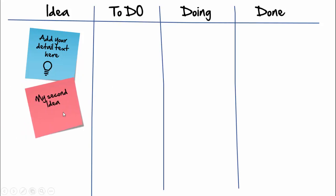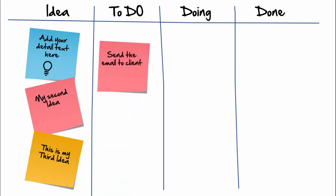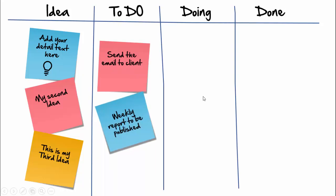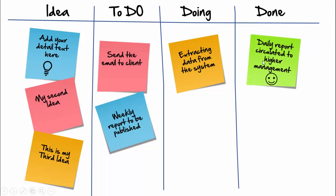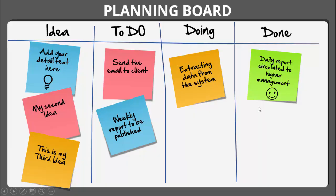Then click the next one — the second idea will come, then the third idea. When I click, the to-do list will come. The first thing I would like to do is to send the email to the client, and the second is a weekly report to be published. Currently what I'm working on you can add the text here, and then done — I have set daily reports circulated to higher management. Depending on your requirement you can increase or decrease the post-it notes.